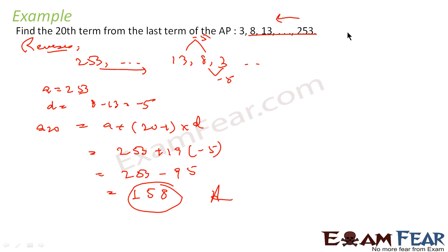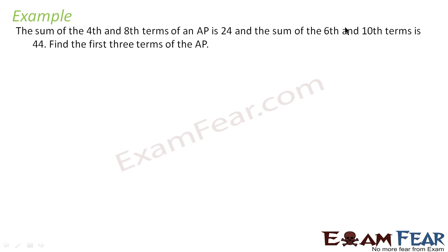Very simple. When you are asked to find a term from the last, the best thing is to reverse the AP. You reverse the AP, you get a different AP with a different a and different d, and then you find the nth term from the beginning.